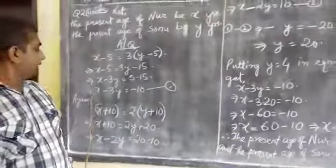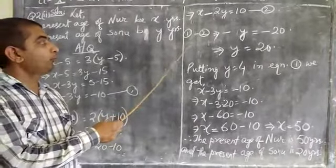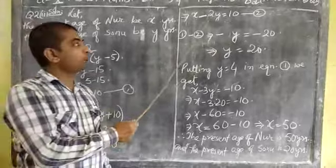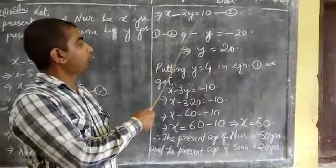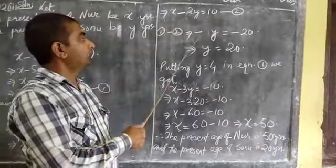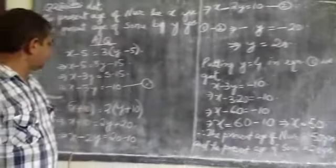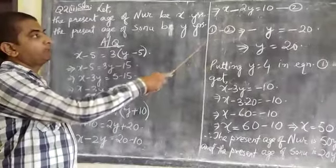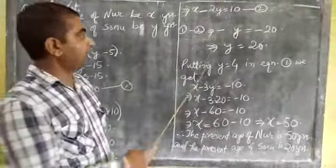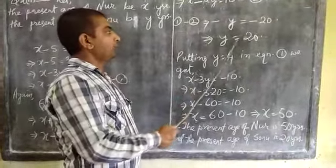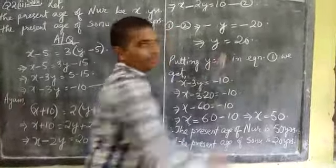Since the coefficient of x in equation 1 and the coefficient of x in equation 2 are equal, therefore we will subtract equation 2 from equation 1. When we subtract equation 2 from 1, the lower equation will change the sign, therefore we will get minus y is equal to minus 20. Because minus 3y, this will become plus 2y is equal to minus y, implies minus 10 minus 10 is minus 20. Multiplying throughout with minus 1 implies y is equal to 20.